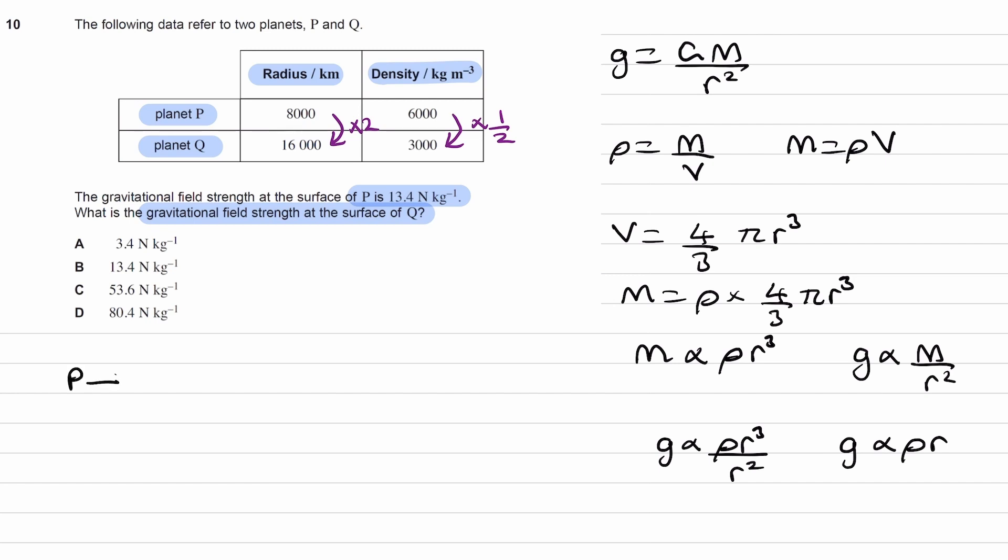When going from P to Q, we're considering g is proportional to rho r. We replace the rho and the r by the factors by which they change. So g gets multiplied by a half times two, which is just one. Therefore, there is no change. The gravitational field strength will then just be 13.4. Thank you.